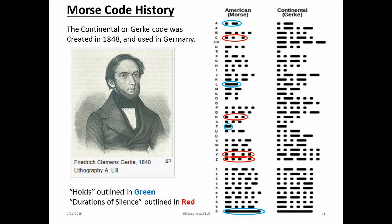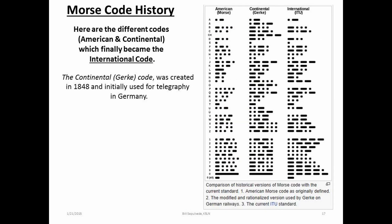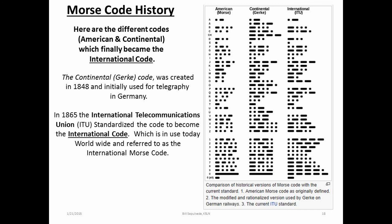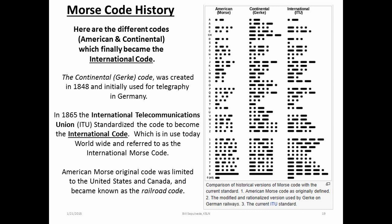This new code was first adopted by the German Telegraphy Agency. However, after some minor changes, the International Morse Code was standardized at the International Telegraphy Congress in Paris in 1865, and was later made the standard by the International Telecommunications Union, the ITU. Morse's original code specification was limited in use to the United States and Canada, and became known as American Morse Code, or Railroad Code. The American Morse Code is now seldom used except in historical reenactments.